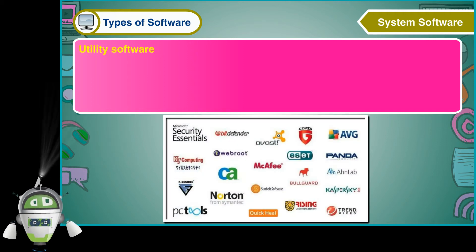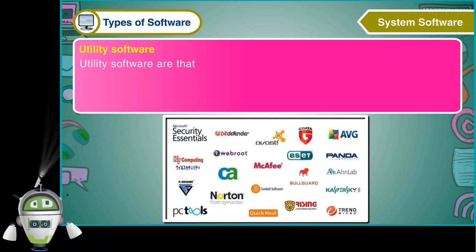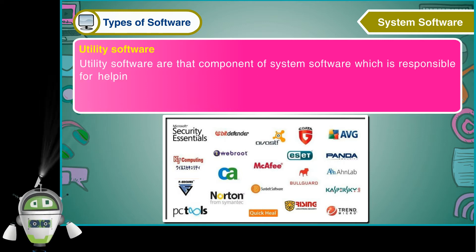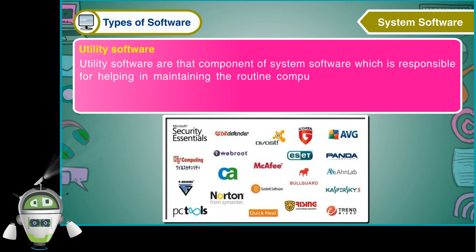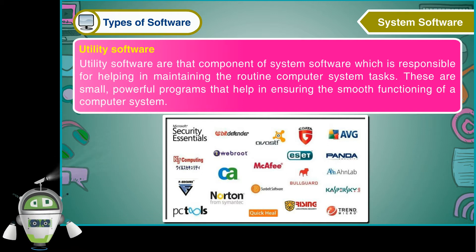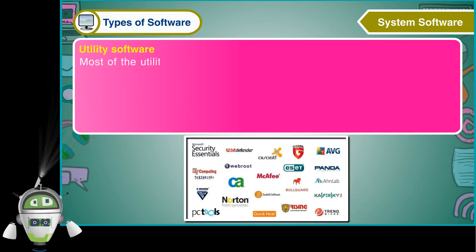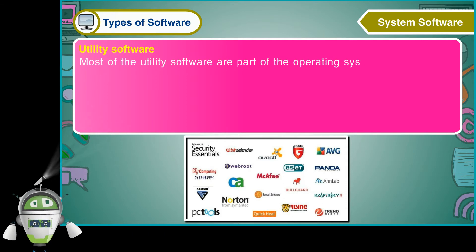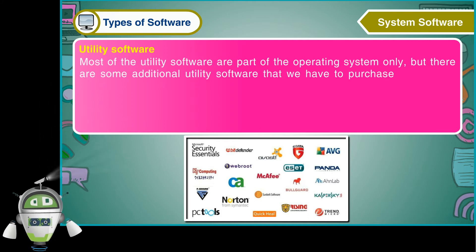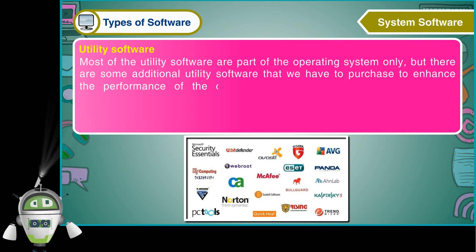Utility software are that component of system software which is responsible for helping in maintaining the routine computer system tasks. These are small, powerful programs that help in ensuring the smooth functioning of a computer system. Most of the utility software are part of the operating system only, but there are some additional utility software that we have to purchase to enhance the performance of the computer system.